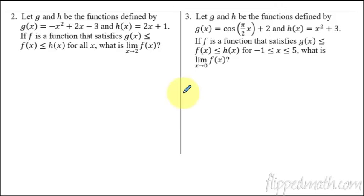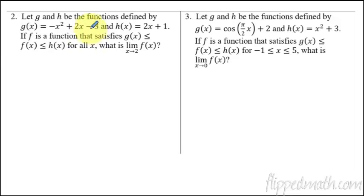So now let's practice some problems you're much more likely to see on an AP exam. This is how they'll usually use the squeeze theorem. They might give you a few functions — in this case, we're given g and h, and it's telling us that g is smaller than f which is smaller than h. Notice they don't even give us f. But they're telling us to find the limit of f as x approaches two. We don't know what the limit is if we don't even know what the function is. But if we know what g is, let's just find the limit. The limit as x approaches two of g is direct substitution: negative two squared is four, plus four minus three, so this limit becomes negative three.